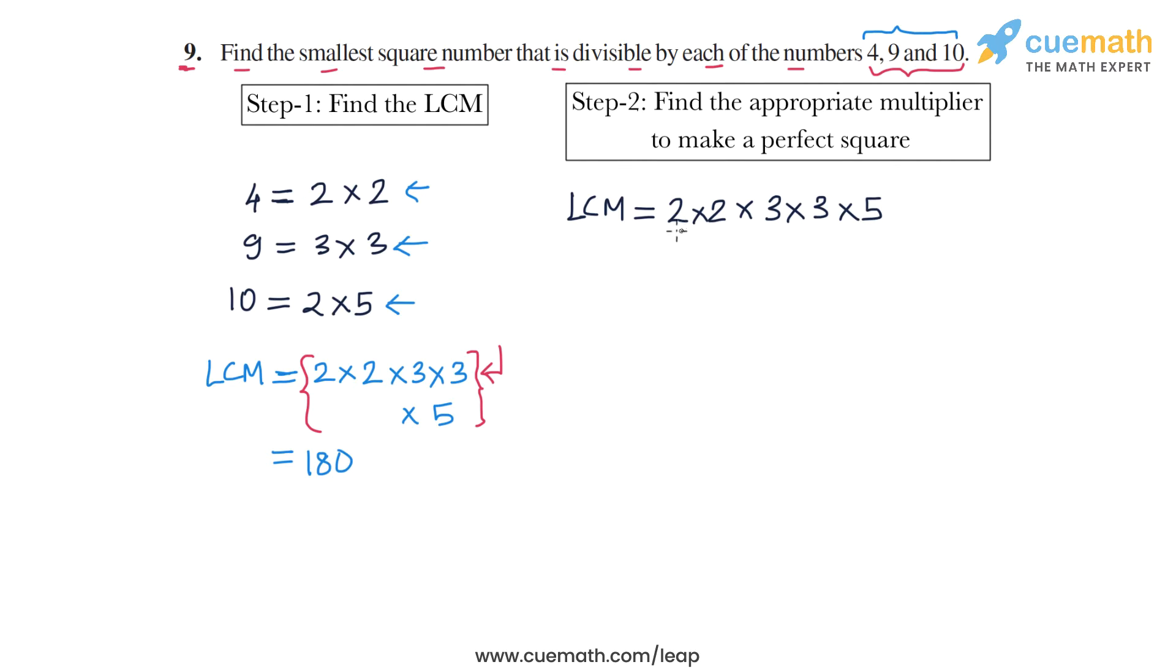Now if you pair up the prime factors, you have a pair of 2, you have a pair of 3, but this 5 is left unpaired. So by what number should you multiply the LCM so that you get a perfect square? Well, that number has to be 5 so that you can complete this incomplete pair of 5.